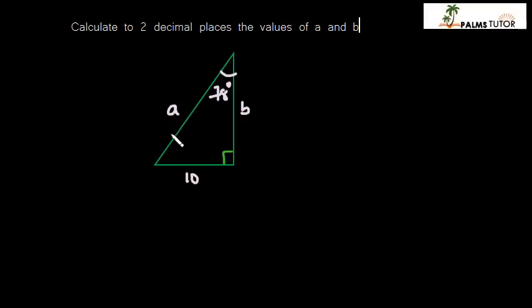In this tutorial, you will learn how to solve for sides of a right angle triangle provided that an angle and a side is known. This question requires us to calculate to two decimal places the values of a and b. The trig ratios are depicted by this mnemonic SOH CAH TOA. SOH represents sine, which relates opposite to hypotenuse.